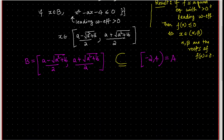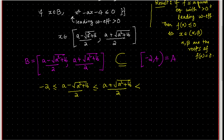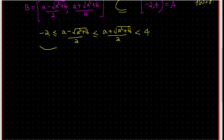The condition B ⊆ A means: -2 ≤ (a - √(a²+16))/2 ≤ (a + √(a²+16))/2 < 4, where 4 is strictly excluded due to the open bracket. We break this into two inequalities: Inequality 1 and Inequality 2.